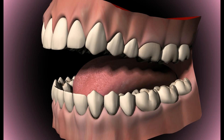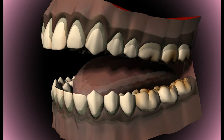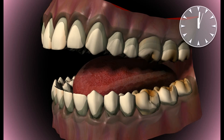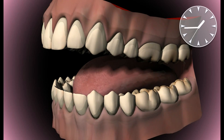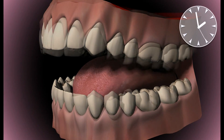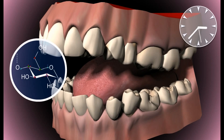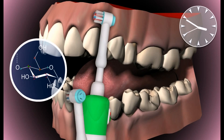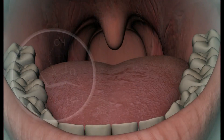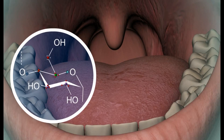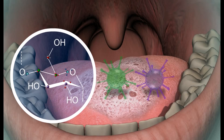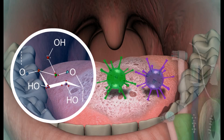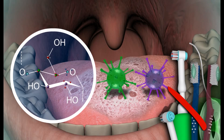The most important factors are certain host factors, plaque, and time. Host factors encompass all the factors relating to the host, such as tooth anatomy, saliva composition, and cleaning habits. Plaque is a layer on the teeth consisting of saliva parts, bacteria, and carbohydrates, and forms when the teeth are not cleaned properly.